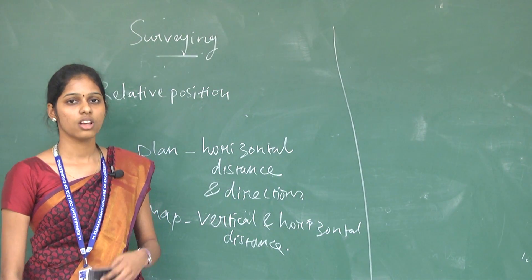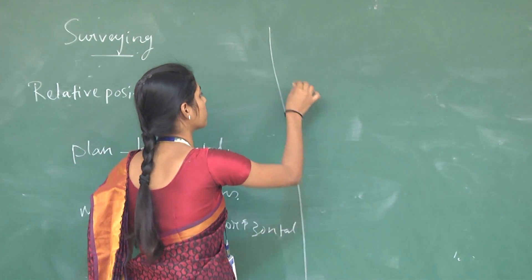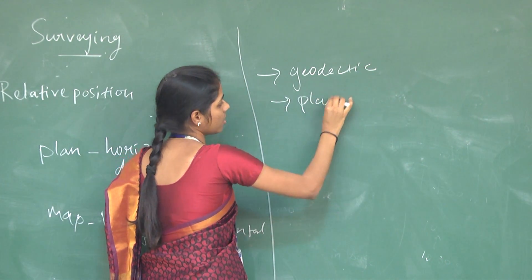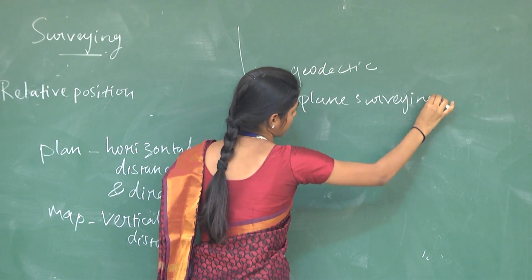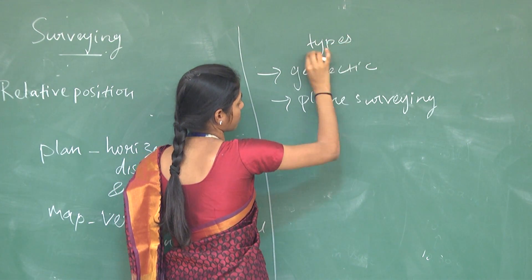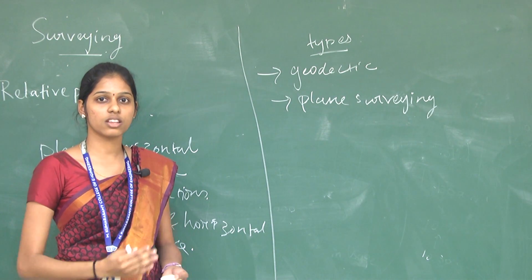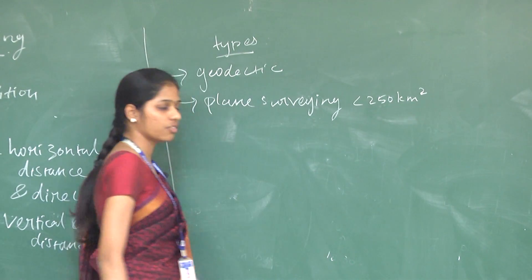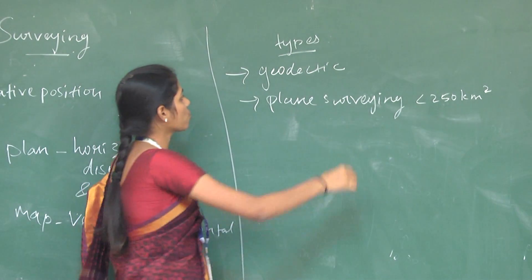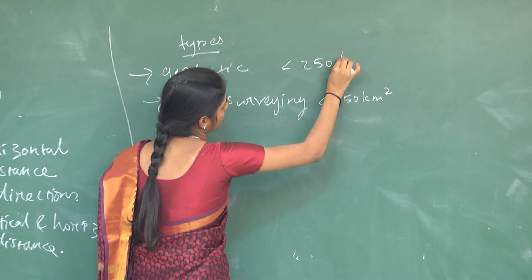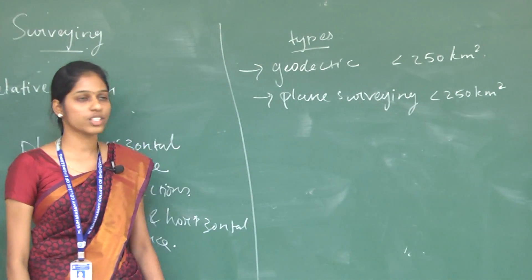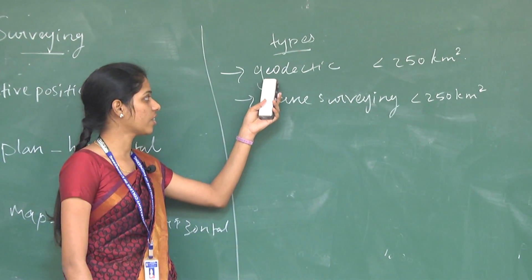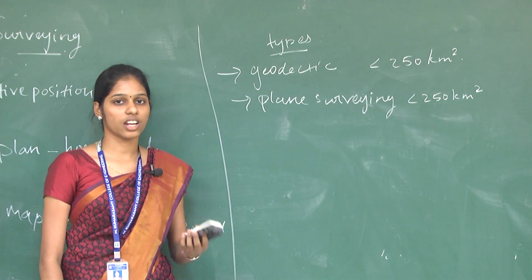Surveying is primarily classified into two types: geodetic surveying and plane surveying. If the area being surveyed is less than 250 square kilometers, it is plane surveying. If the area exceeds 250 square kilometers, it is geodetic surveying. The main difference is that the curvature of the earth is taken into account in geodetic surveying, while in plane surveying the area is treated as a plane surface.